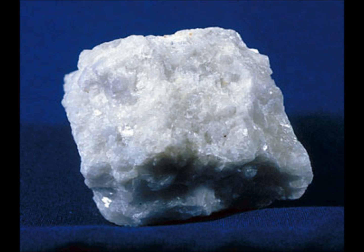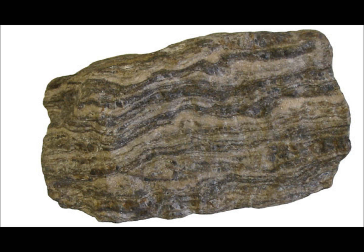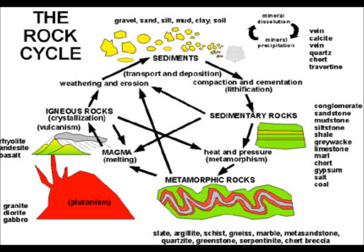Marble, as you can see, is an unfoliated rock. Marble does not contain any bands and ranges from white to black depending on the heat. Gneiss, on the other hand, is a foliated rock — you can see the bands, where the mineral-rich rock moved together during the heat and pressure that was applied.